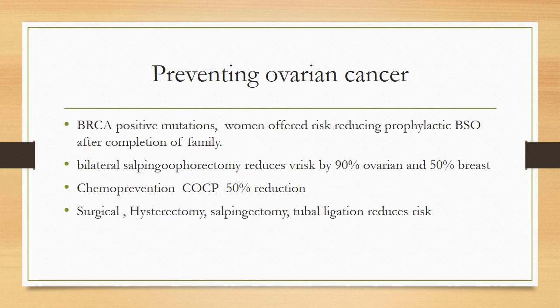Surgical prevention: hysterectomy, salpingo-oophorectomy, and tubal ligation reduce the risk of ovarian cancer. Chemo-prevention using combined pills reduces ovarian cancer risk by up to 50% in both BRCA mutation carriers and women at average risk of ovarian cancer.